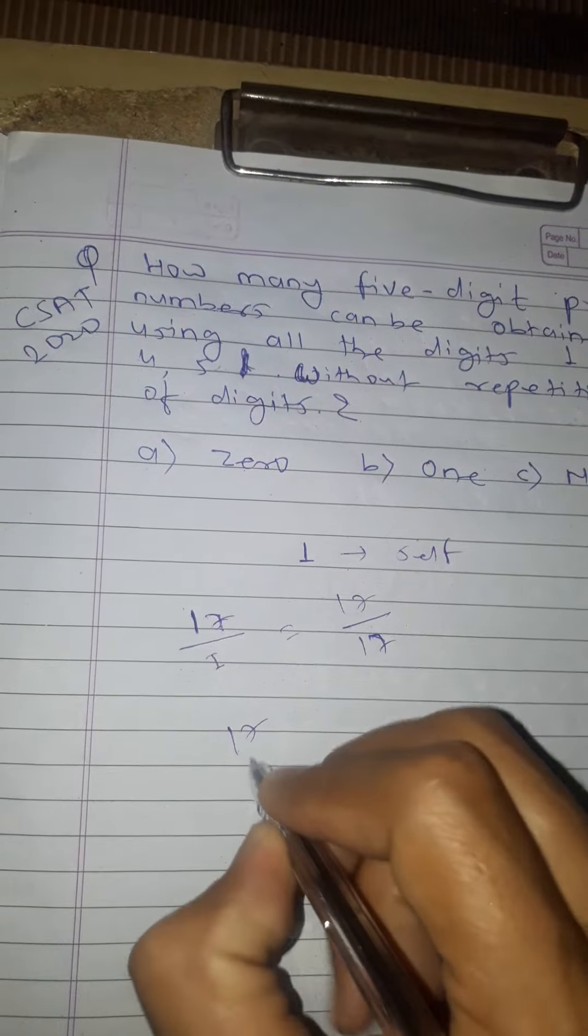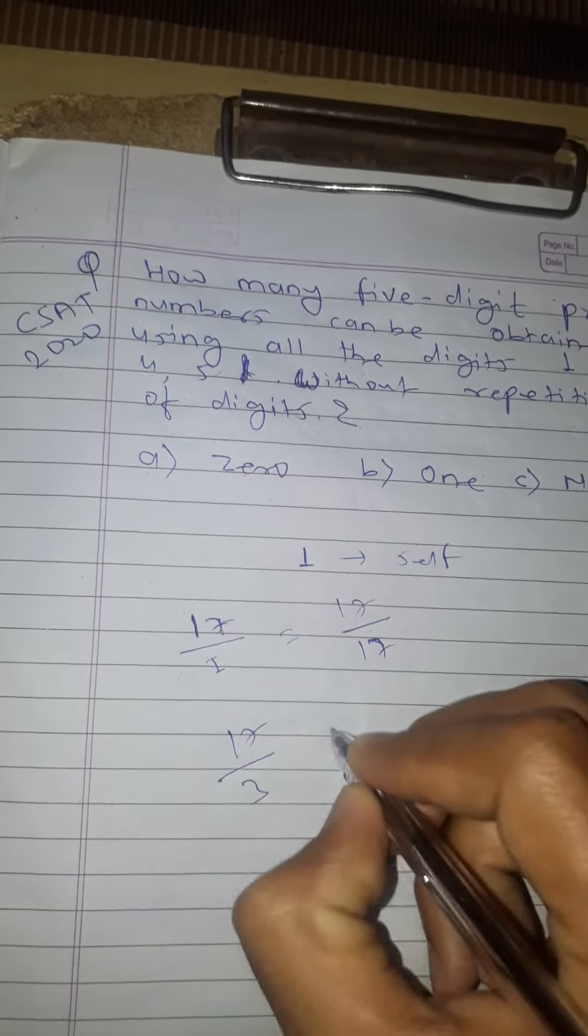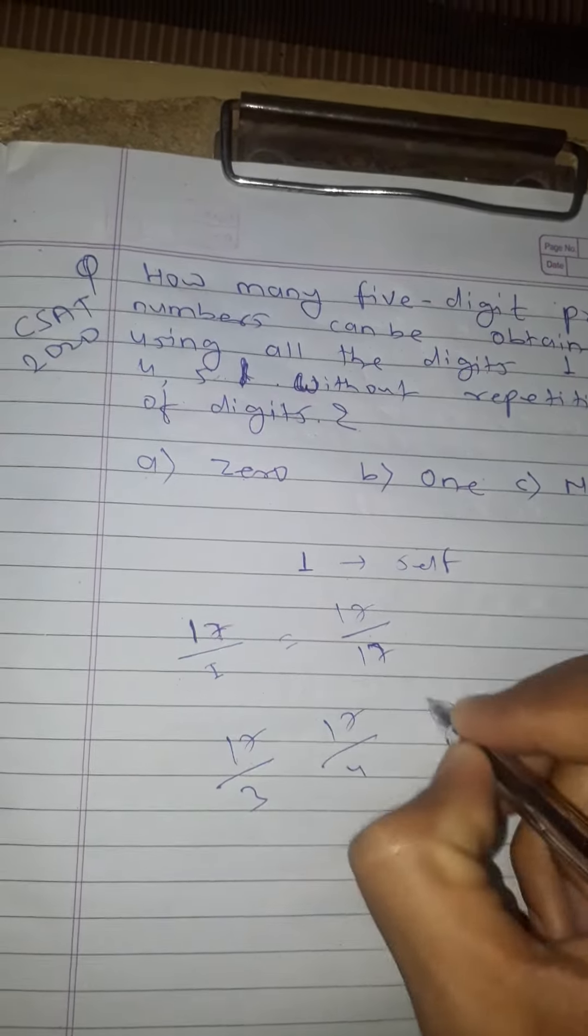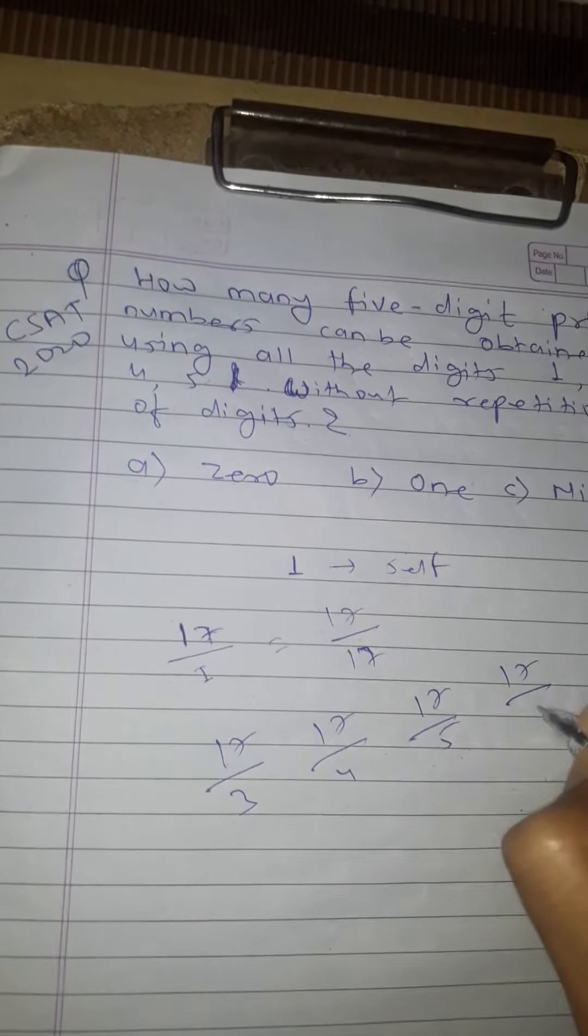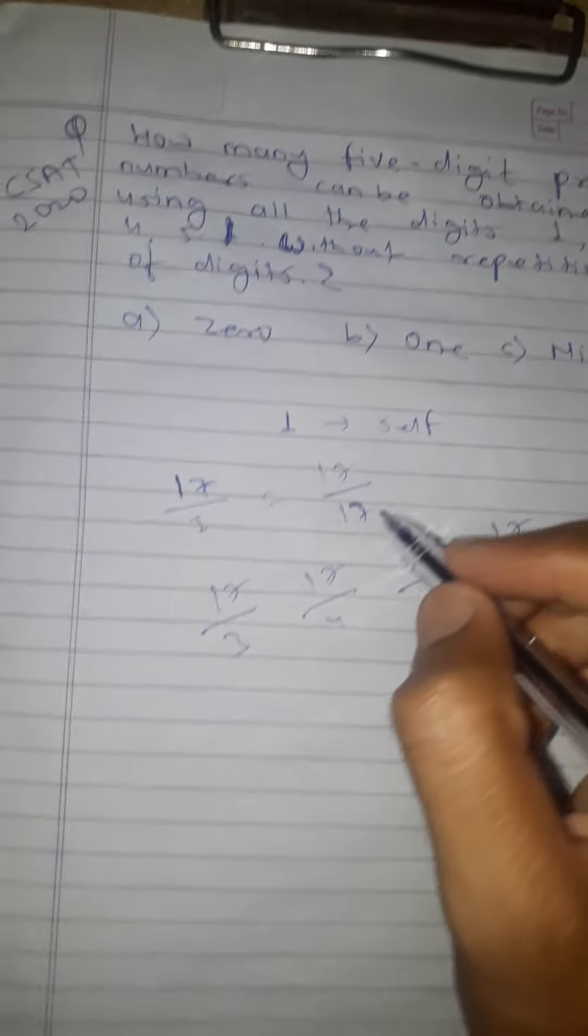17 is not divisible by 3, 4, 5, or 6 - only by 1 and 17. This makes it a prime number.